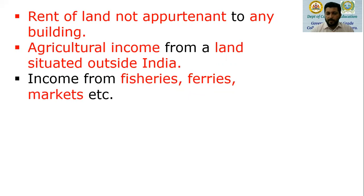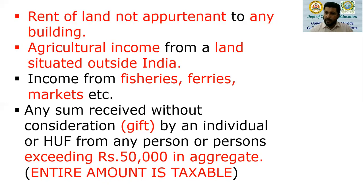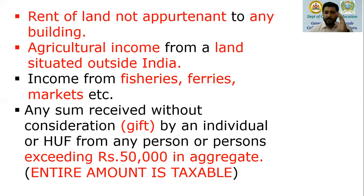Then, income from fisheries, ferries, markets, etc. is shown under the head other sources. Then, any sum received without consideration — that is, a gift by an individual or HUF from any person or persons exceeding Rs. 50,000 in aggregate. If the gift amount exceeds Rs. 50,000, the entire amount is taxable. Gift received from relatives on any occasion, and gift received from anyone on the occasion of marriage, is fully exempt from tax. But gift received from friends or any other person where the aggregate value exceeds Rs. 50,000 — the entire amount will be taxable. If the gift amount is exactly Rs. 50,000 or less, nothing is taxable.